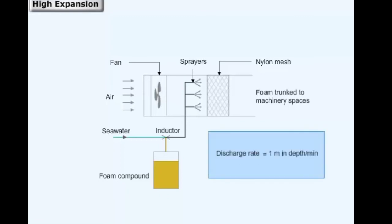Discharge should be at a rate of one meter depth per minute. The quantity of foam forming liquid should be equal to five times the volume of the largest space to be protected. The volume of foam forming liquid equals five times the volume of the maximum space to be protected.